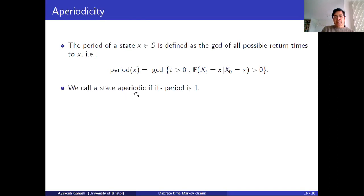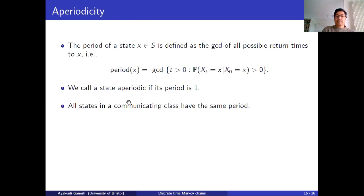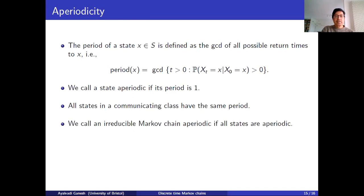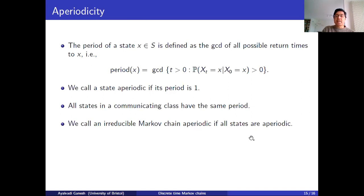We call a state aperiodic if its greatest common divisor is one. All states in the same communicating class have the same period. If a Markov chain is irreducible, there is just one communicating class and all states have the same period. We call an irreducible Markov chain aperiodic if all its states have period one.